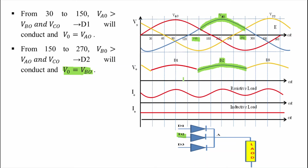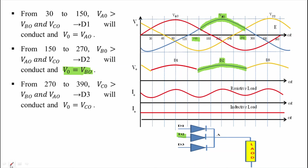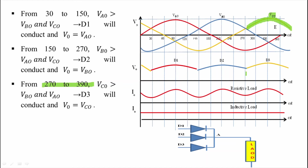From 270° to 390° (ωt = 270° to 390°), the waveform of phase C is at the top, which means Vc0 is greater than Vb0 and Va0. So only diode D3 will conduct because Vc0 is applied to diode D3, and we will get output voltage V0 = Vc0.